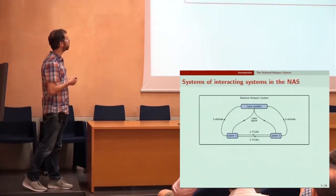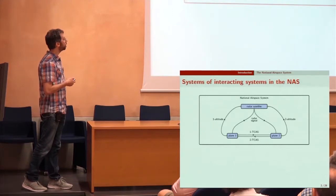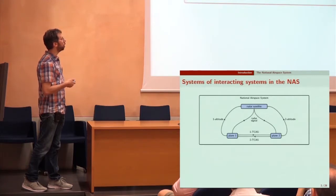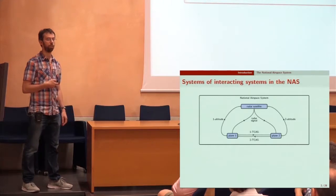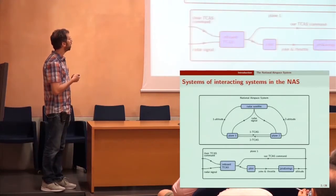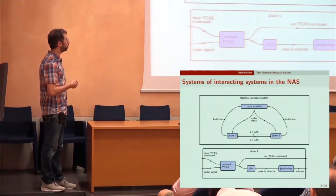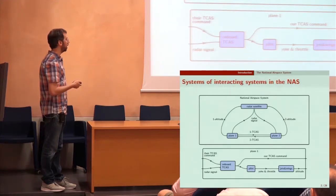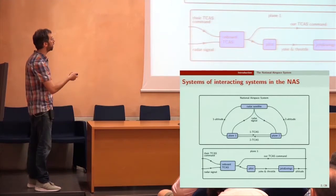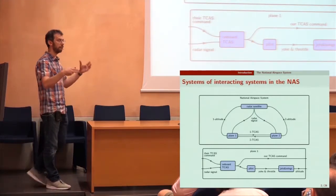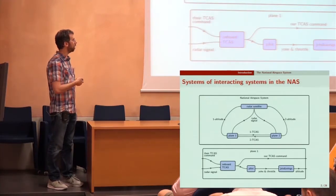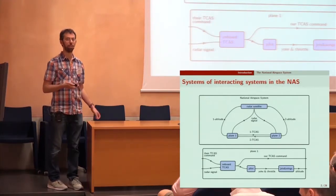Here's a picture: you have two planes. Plane one sends plane two 'I'm planning to move up'; plane two takes that information and also the radar signal and satisfies the differential equation which changes its altitude. Inside plane one you could zoom in and see that the onboard TCAS takes the other plane's TCAS command, the radar signal says we're both at these altitudes, sends a signal to the pilot who controls the throttle, and the altitude changes by differential equation. You could zoom in and zoom in — each of these systems was made by a different company so you don't know what's inside any of them.